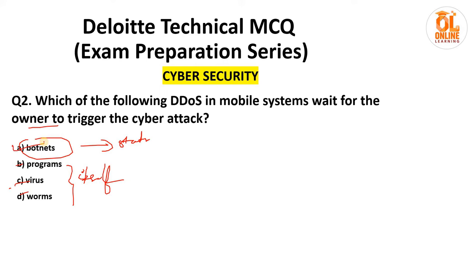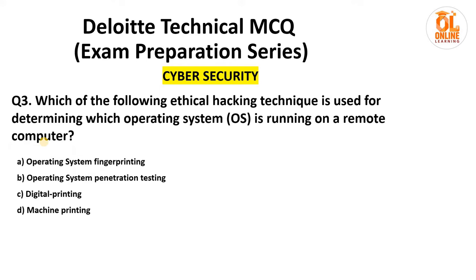The third question: which of the following ethical hacking techniques is used for determining which operating system is running on a remote computer? The technique is asking which is used to determine whether it's a Linux-based system, Android-based system, Windows, Mac, or whatever. The answer is option A: operating system fingerprinting. This is the technique name through which a remote location's operating system can be determined.